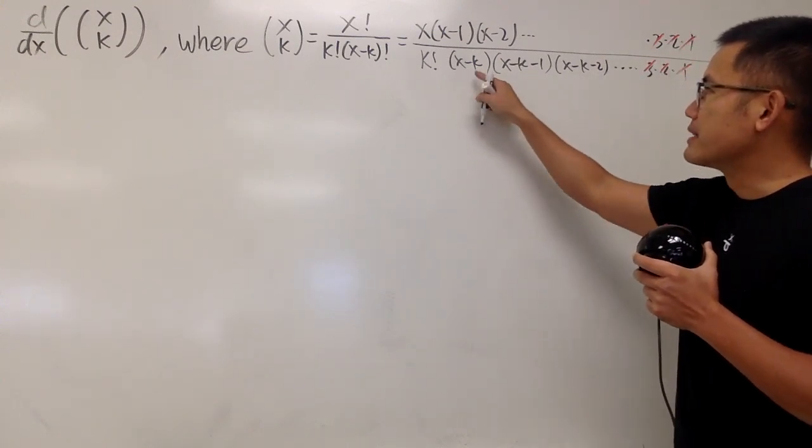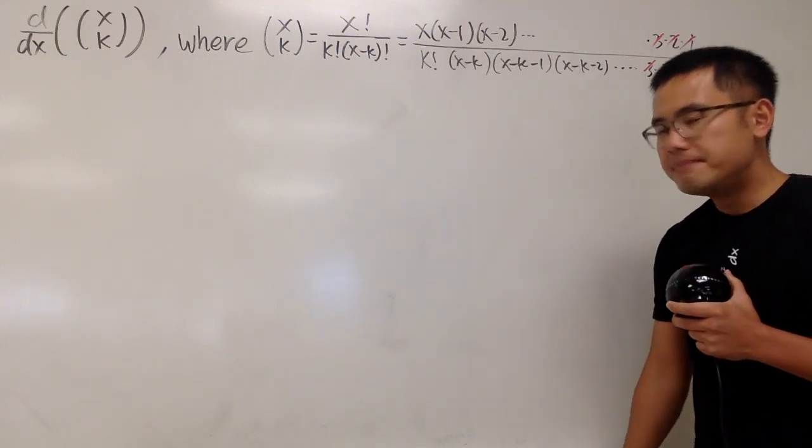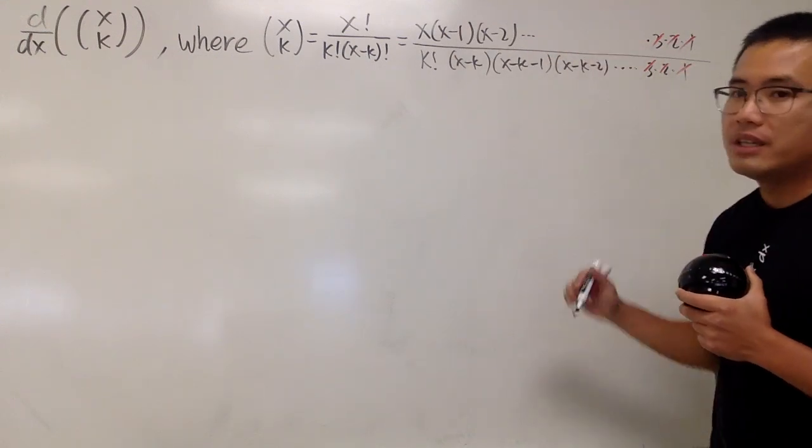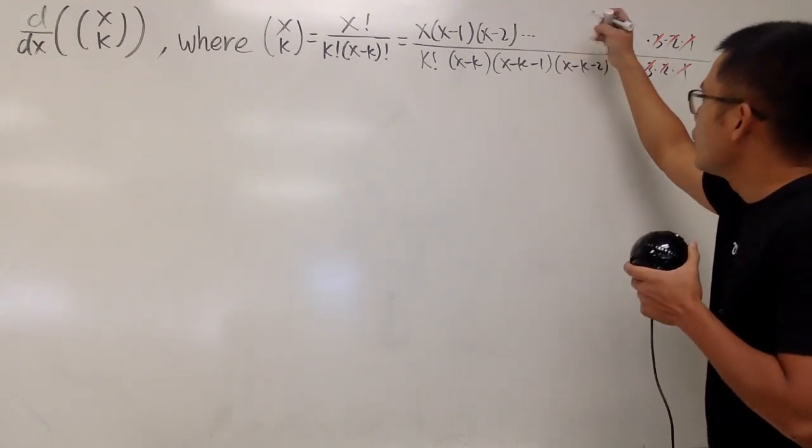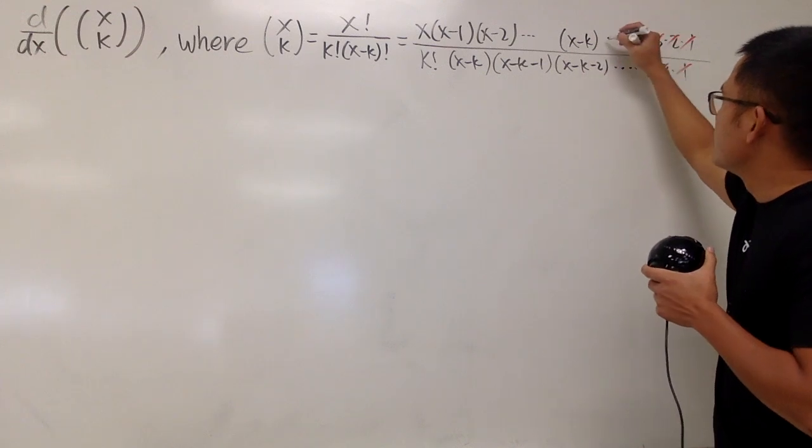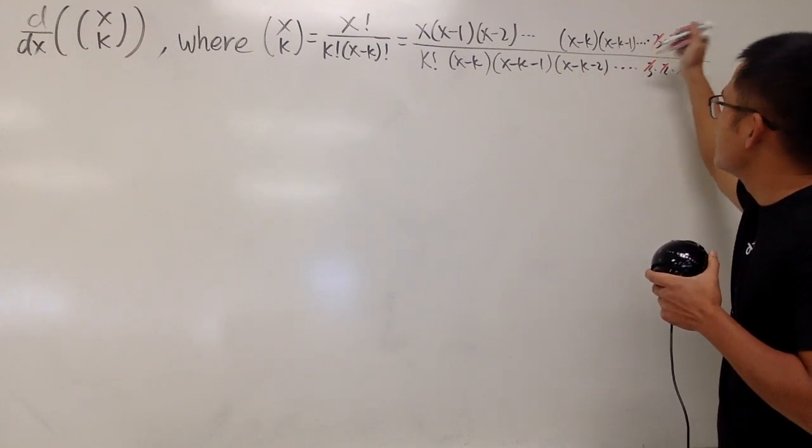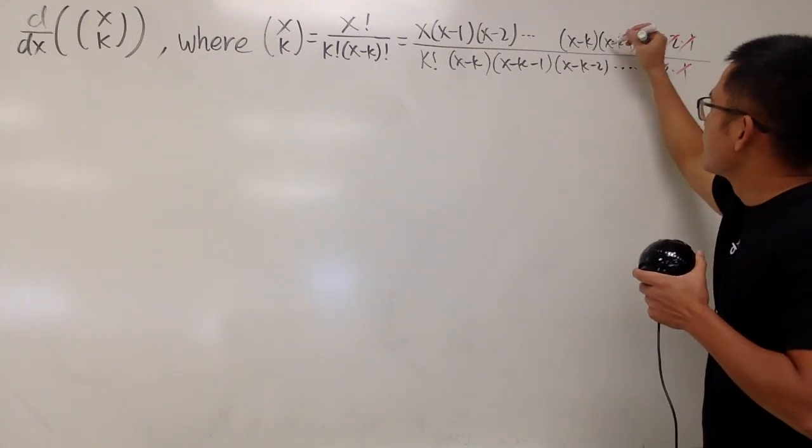See, once we break this down, we can cancel things out, top and bottom. For example, the 3s, the 2s, the 1s, of course. So these guys are going to be canceled here.